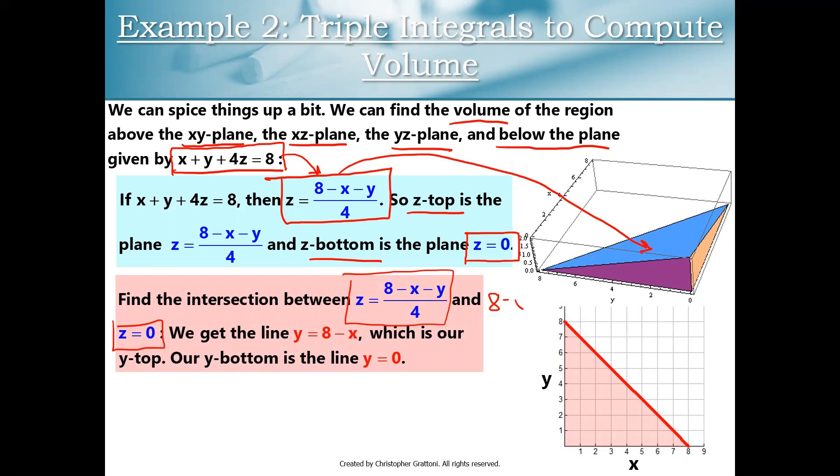We take 8 minus X minus Y over 4, Z top, and set that equal to 0, Z bottom. We're going to solve that for Y, and we get the equation of the line Y equals 8 minus X, which is right here. That's our Y top, and we can see that our Y bottom will be the equation Y equals 0.